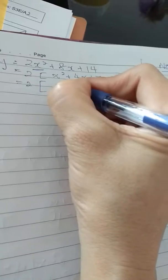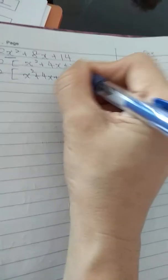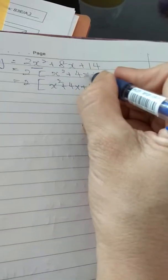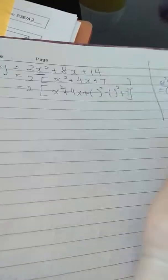This is under your note. From here, I will have to plus something squared and minus something squared, then copy the +7 behind. This will be the coefficient of x always divided by 2, so it's 4 divided by 2.